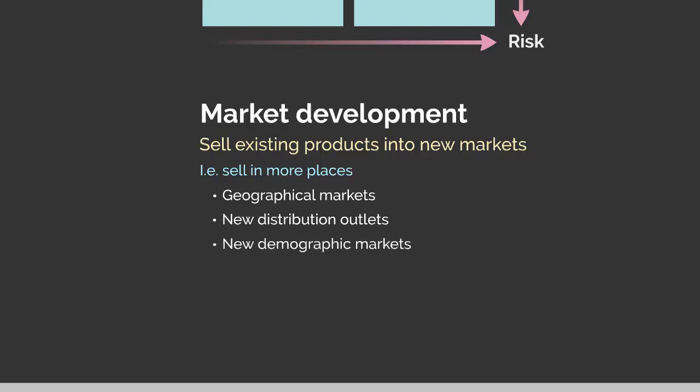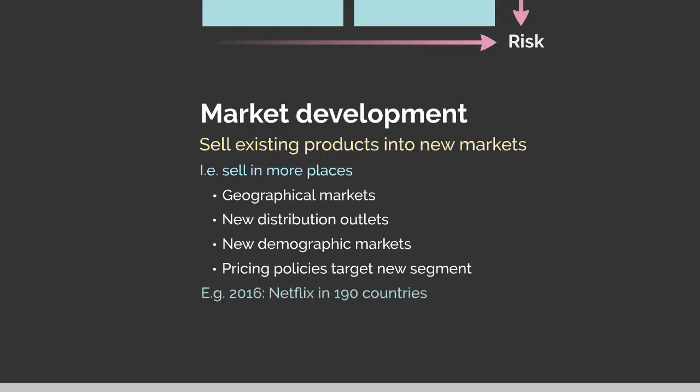Entities can also offer existing products to new demographic markets. For example, imagine a company selling large quantities of paint to industry — by simply repackaging the paint into smaller pots, they can sell the same existing product to home users. Another technique is using alternative pricing policies to appeal to new customer bases, such as bulk purchasing discounts.